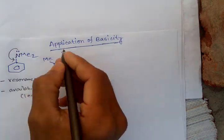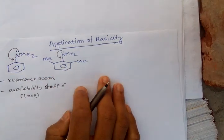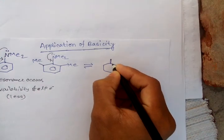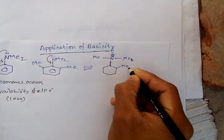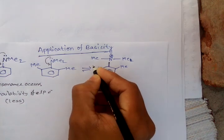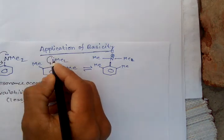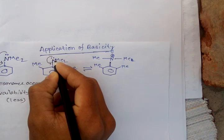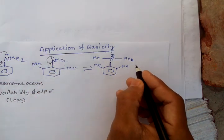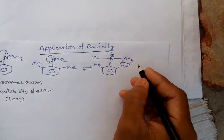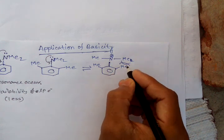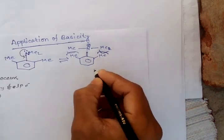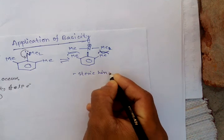For the second one, when it comes down for resonance, we have a methyl group on the nitrogen atom and an ortho methyl group located on the ring cycle. These methyl groups at the ortho position are steric hinderers — they create steric hindrance.